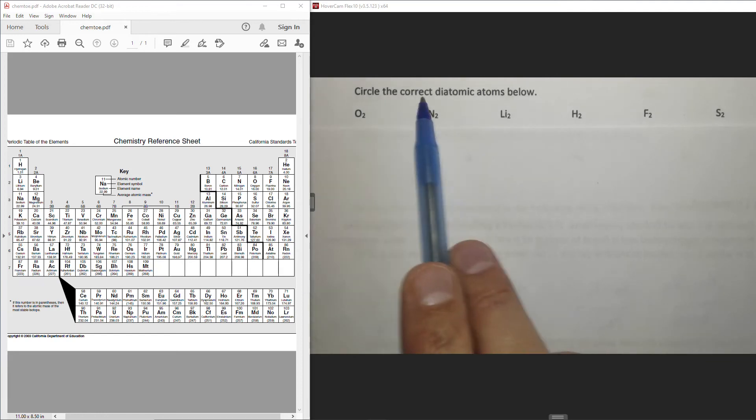This question says circle the correct diatomic atoms below. So diatomic atoms are atoms that exist in nature with a pair, and it won't be told much later in the course until we explain why that is.